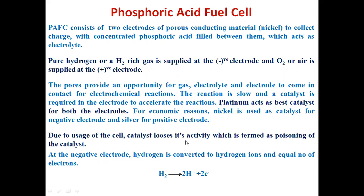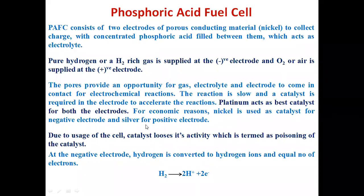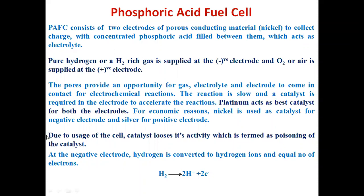Due to usage of the cell, the catalyst loses its activity, which is termed as poisoning of the catalyst. If a catalyst is used properly, a large amount of current will be generated; without it, the magnitude of current will be low. At the negative electrode, hydrogen is converted to hydrogen ions and an equal number of electrons. Electrons move to the negative terminal through the load and generate electricity, while positive hydrogen ions move to the positive terminal, react with oxygen, and make H₂O.